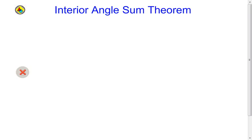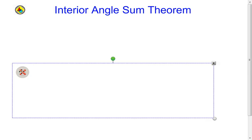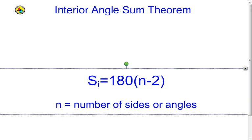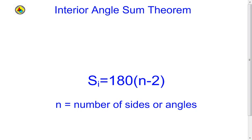The first thing we're going to look at is the interior angle sum theorem that we looked at in the computer lab. This theorem tells us that if we take all the angles in the polygon and add them together, instead of actually having to add them all up, we can just use this formula, where we take n — the number of sides the polygon has — subtract 2 from it, and then multiply that quantity by 180.